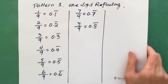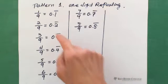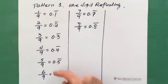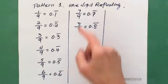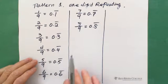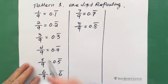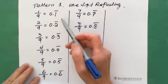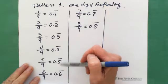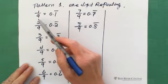So 1 over 9 equals 0.1 repeating, 2 over 9 equals 0.2 repeating, and so on. This is a very important pattern, and it makes things very fast. The one-digit repeating decimal is always related to the denominator of 9.